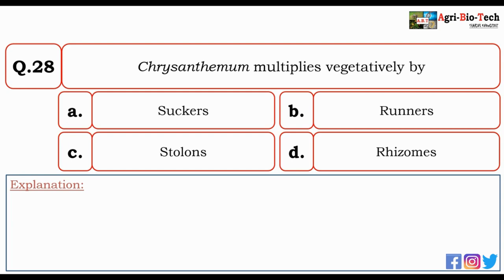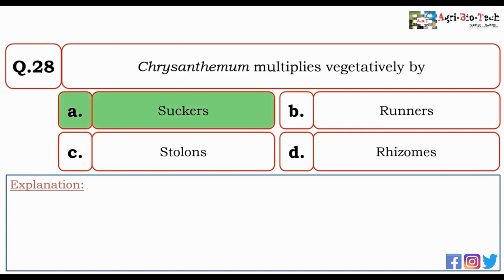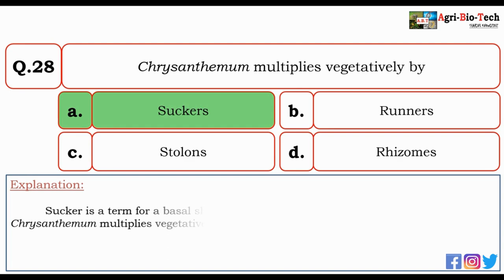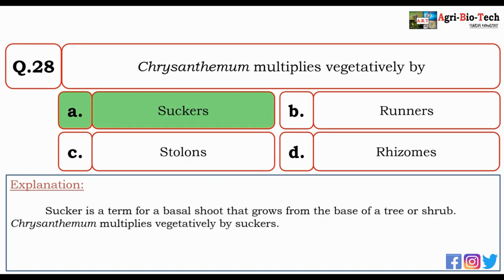Next question: Chrysanthemum multiplies vegetatively by — suckers, runners, stolons, or rhizomes? The correct option is A — suckers. Suckers is a term for a basal shoot that grows from the base of a tree or shrub. Chrysanthemum multiplies vegetatively by suckers.